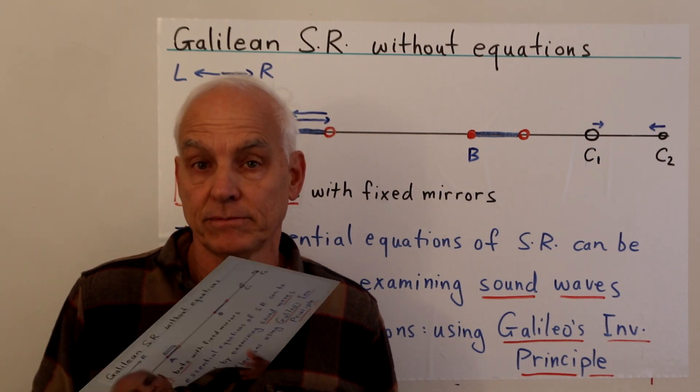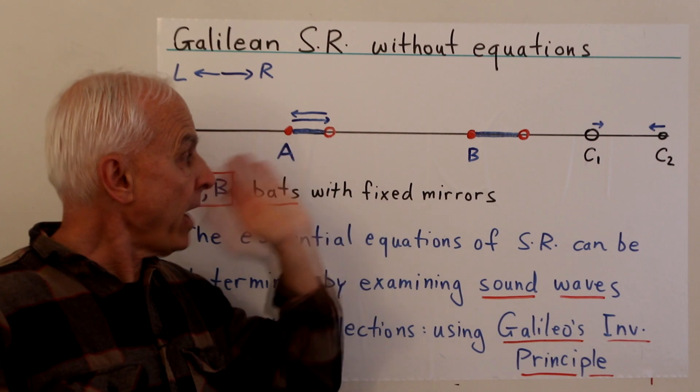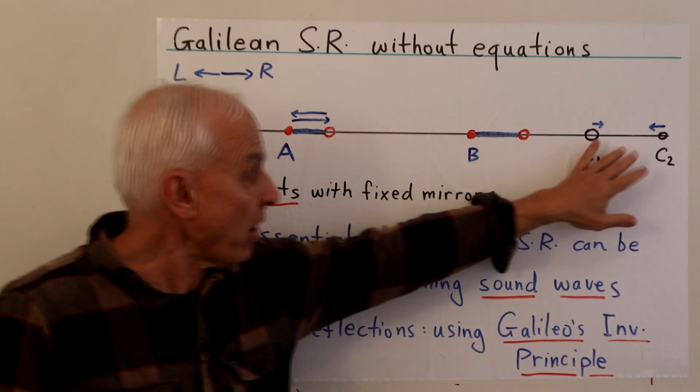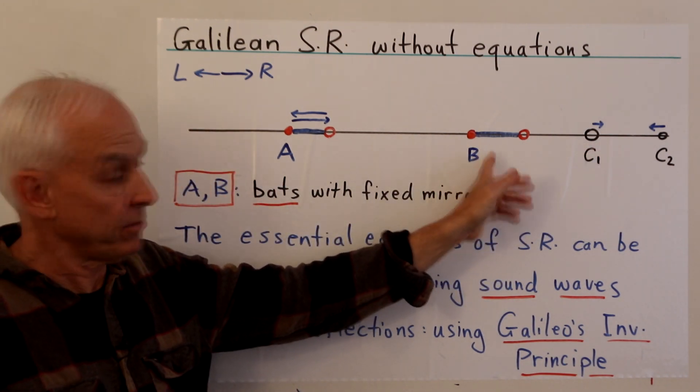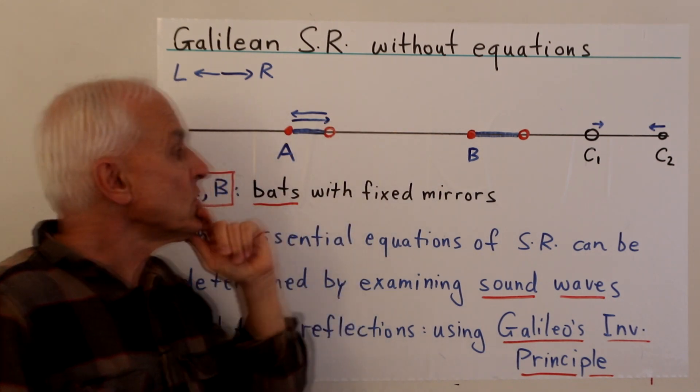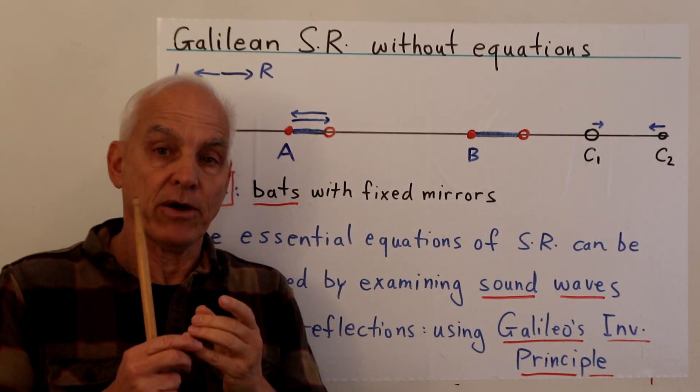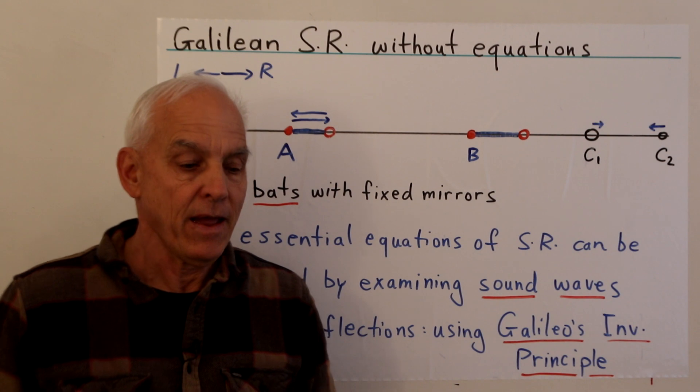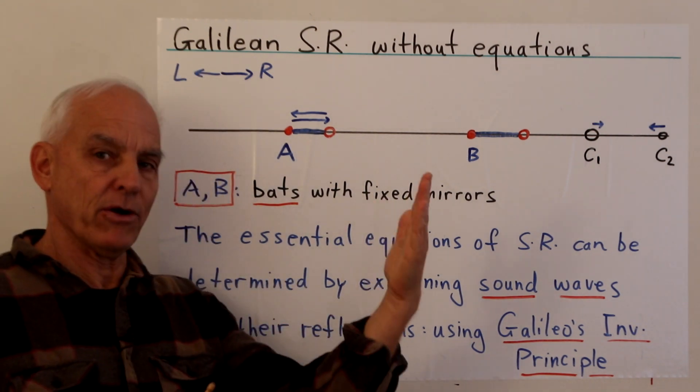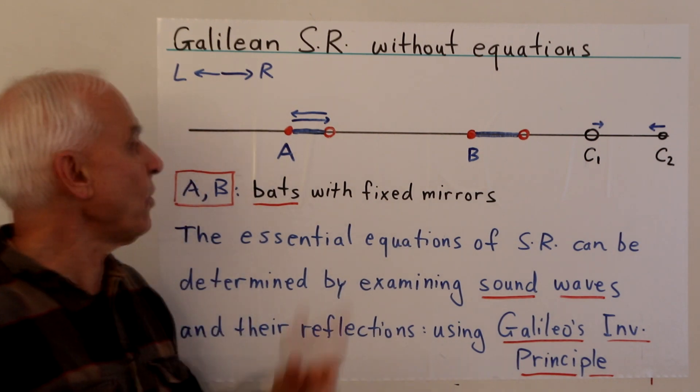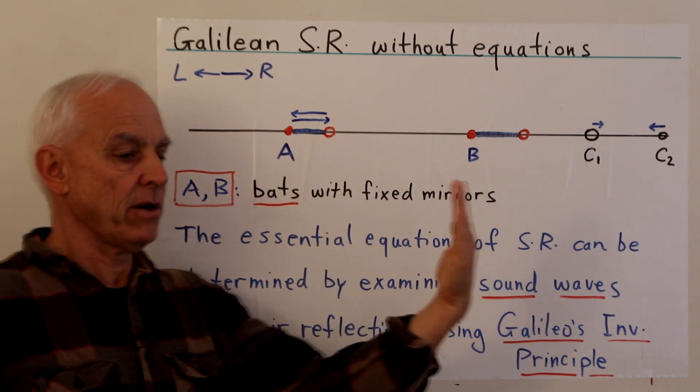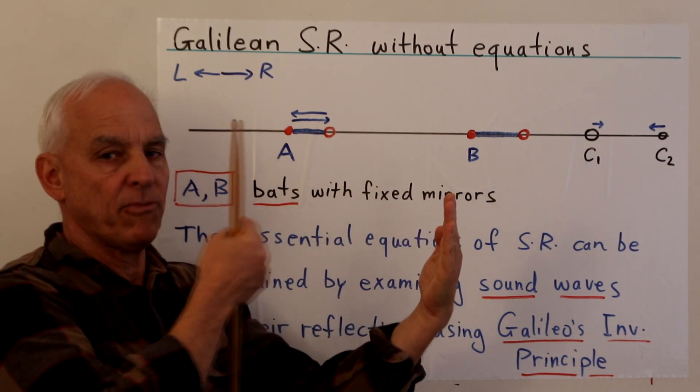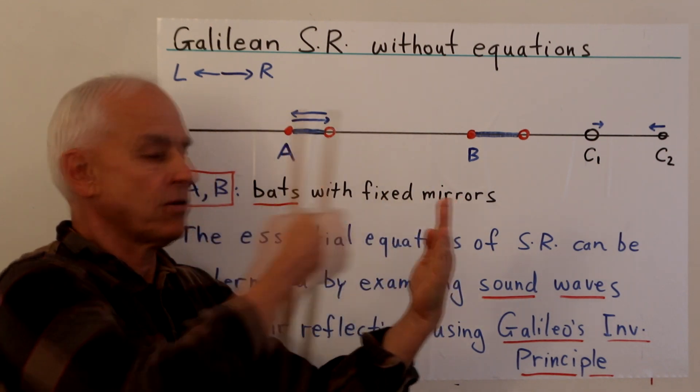Let's start with bat A. Here's bat A, and bat A is interested in making some observations and deductions about the world. Maybe there's some particles over here, maybe there's a second bat B over here which bat A is interested in observing. Bat A does not have a prior notion of a clock, so the first order of business, as Einstein suggests, is to establish a clock. A rudimentary way of doing this is to use a mirror which can reflect the sound.